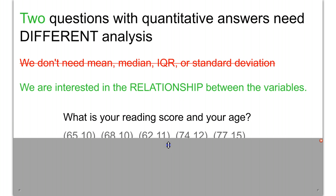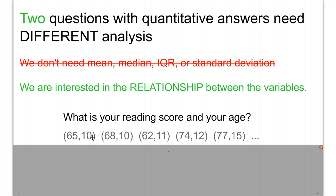So when we look at reading score and age again, we have an opportunity to do something with those points in order to study what that relationship is. The easiest way to do that is exactly what we would do in algebra with a coordinate pair, and that's to graph it. Each of these points put on a graph is called a scatter plot, and we're going to look in more detail at how scatter plots actually work.